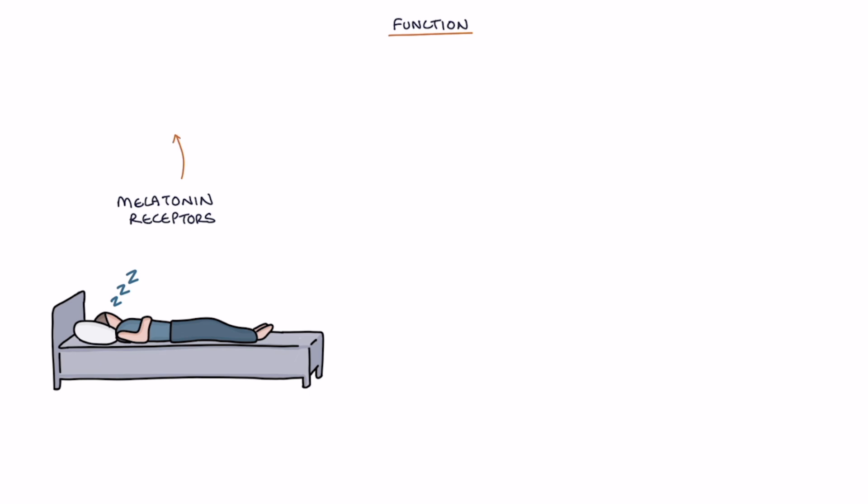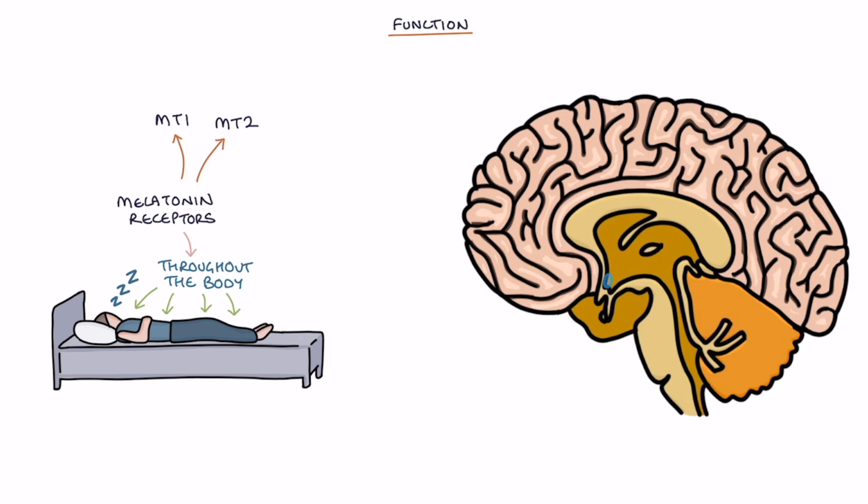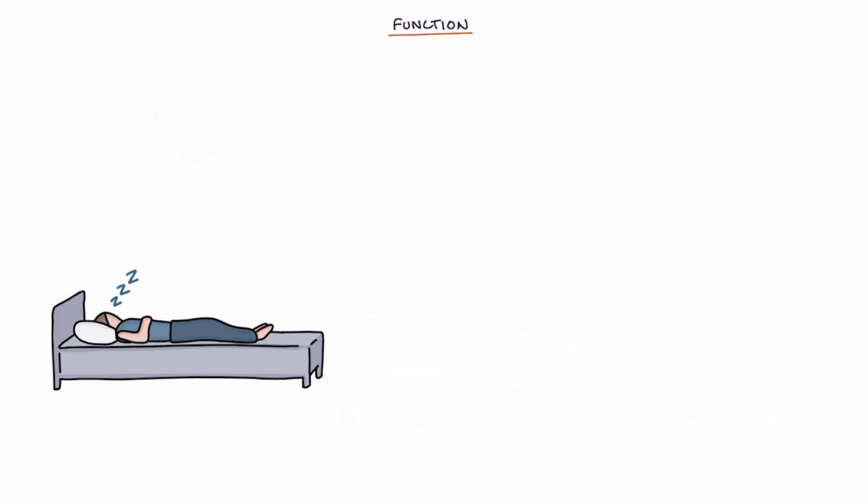Melatonin receptors MT1 and MT2 are found throughout the body. Notably, they're found in the suprachiasmatic nucleus, which is a structure in the anterior hypothalamus responsible for circadian rhythm. In addition to promoting sleep and controlling circadian rhythm, it also helps lower the body temperature and lower the blood pressure.